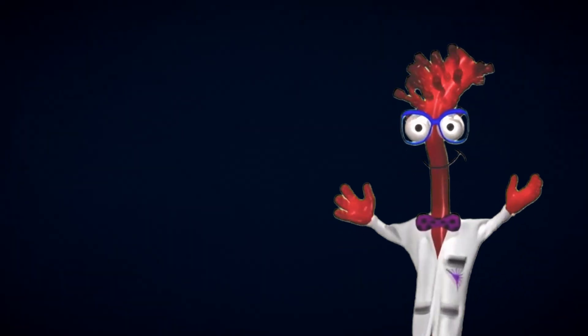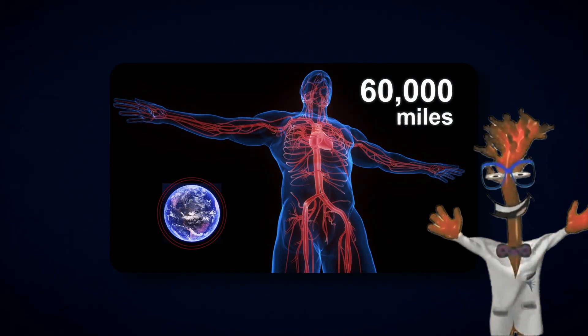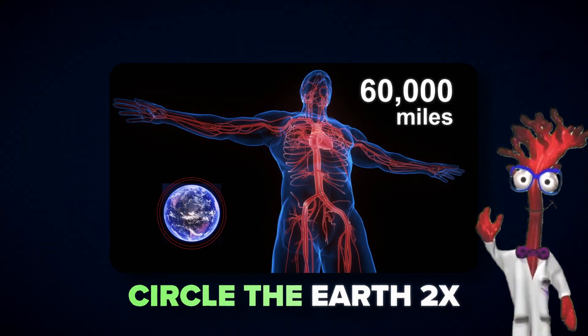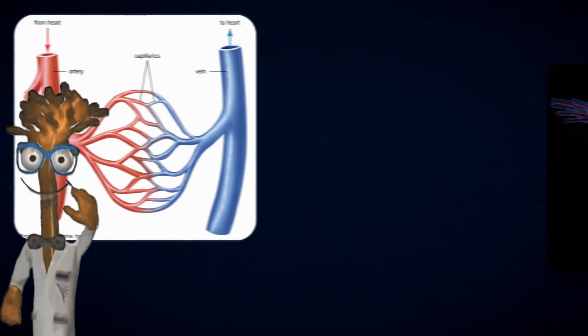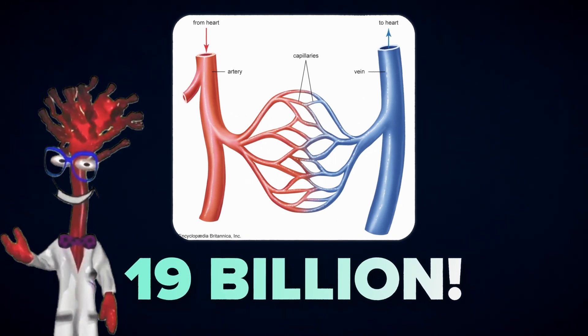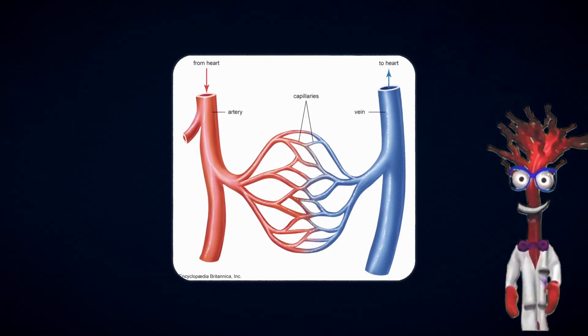What makes blood vessels so extraordinary? Your body contains about 60,000 miles of blood vessels, which is enough to circle the earth twice. The smallest of these, your capillaries, number around 19 billion. These aren't just tubes delivering blood. They're incredibly dynamic structures that change depending on where they are.